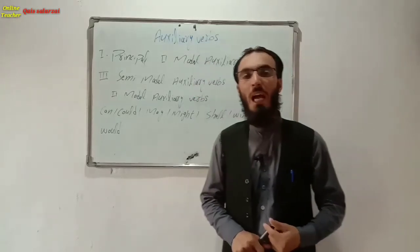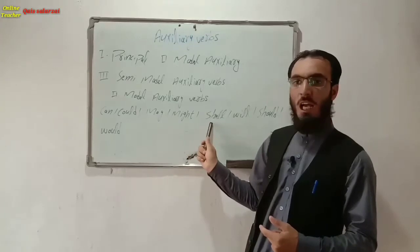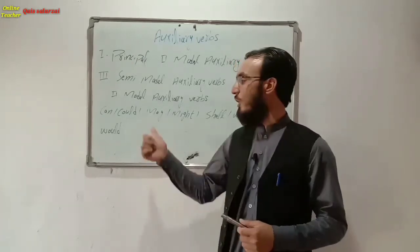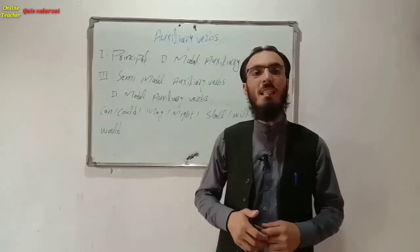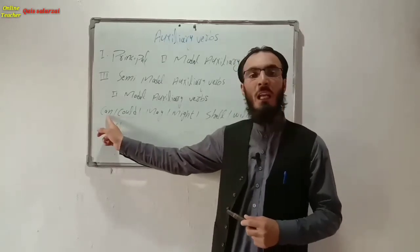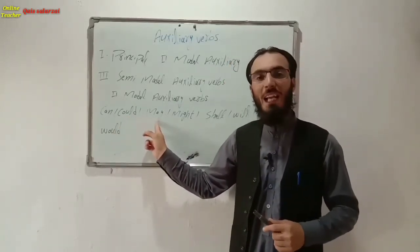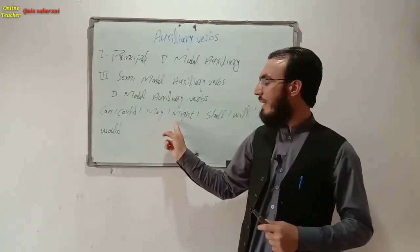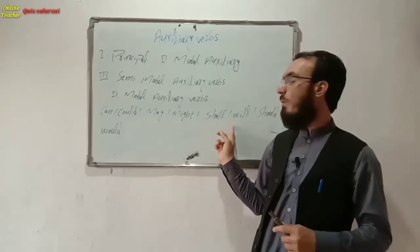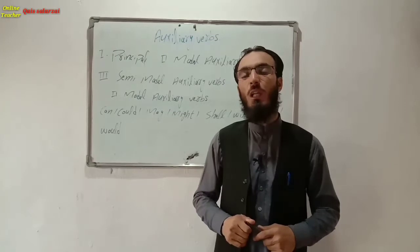The second type is modal auxiliary verbs. The modal auxiliary verbs in English are: can, could, may, might, shall, will, should, and would. Today we will describe one example for each. You can see examples on your screen as well. For example: I can play cricket; I could play cricket in the past; may I come in, sir; I might have gone to Kabul; I shall come tomorrow; I will come here tomorrow; you should go to the doctor; you would be here tomorrow.